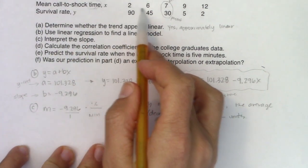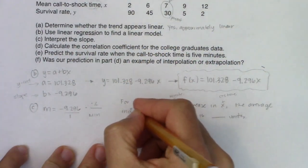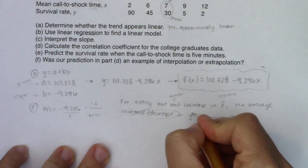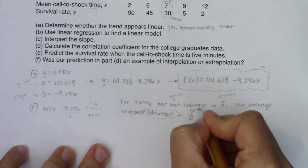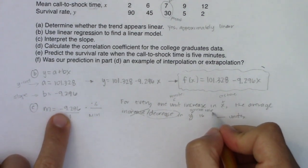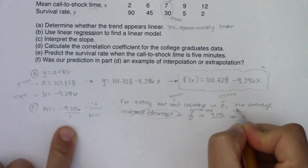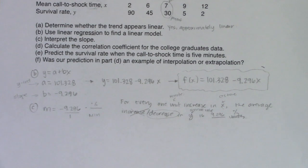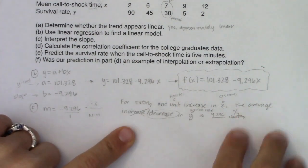The average increase or decrease in y is blank units. Well, what was y doing? Survival rate. Was it increasing or was it decreasing? Well, it was definitely decreasing. So I'll use the decrease option. The average decrease in y. Well, y was survival rate. And what was the number? It was 9.296. And the units here were percent. So I'm about to erase all of this. And then I'm going to write this up, but basically I'm saying for every one minute increase in call to shock time, the average decrease in survival rate is 9.296%. Meaning the longer they take to get to you, it's taking three minutes before they defibrillate you, four minutes before they defibrillate you, five, six, seven, the likelihood of you surviving that cardiac arrest decreases by almost 10% a minute. That's a lot. That does not give you much time to make it.